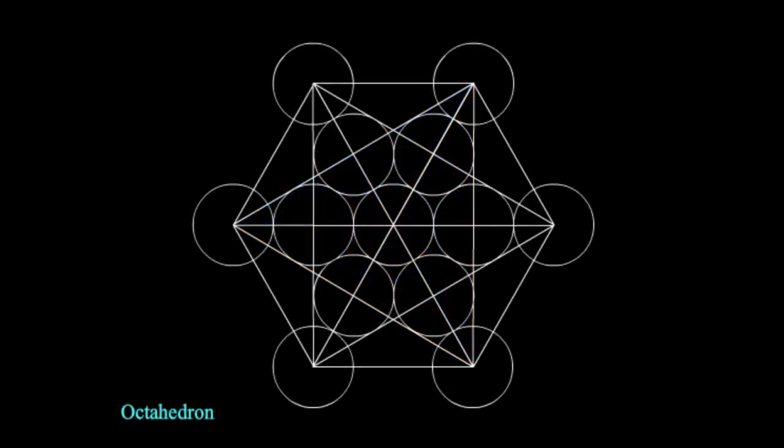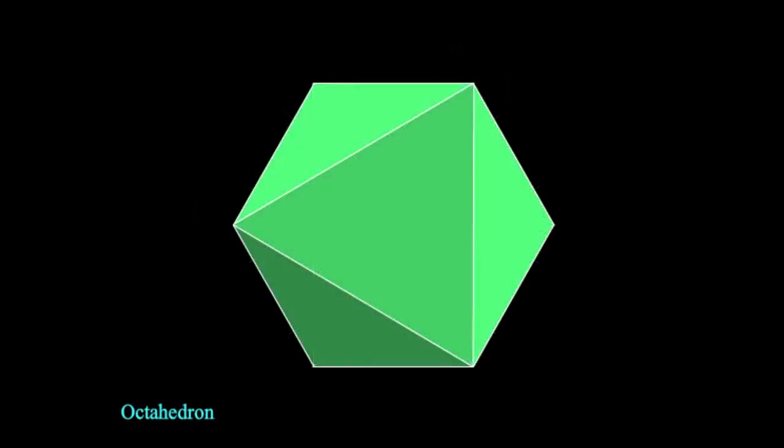So the next shape we're going to look at is the octahedron. The octahedron is a shape that represents communication, mind, and thought. The shape is also associated with the element of air and also time itself.